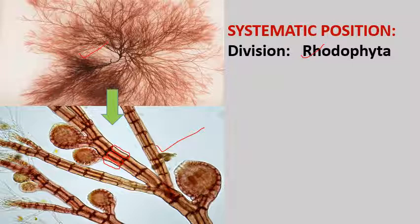We can also talk about thallus organization. Red algae show a variety of thallus organization. There is a unicellular member — unicellular red algae, that is Porphyridium. In addition to this, we have some Palmelloid form, represented by Asterocystis, which shows Palmelloid thallus organization. Then we have a filamentous branched form. And the heterotrichus form — that is Polysiphonia — which we are going to discuss in detail.